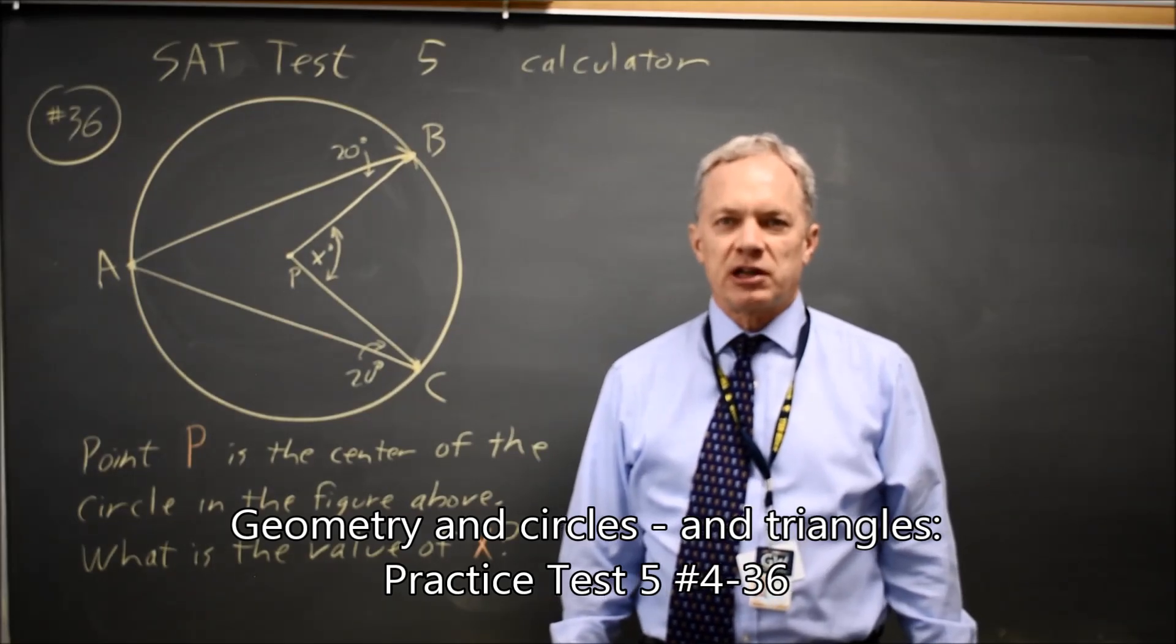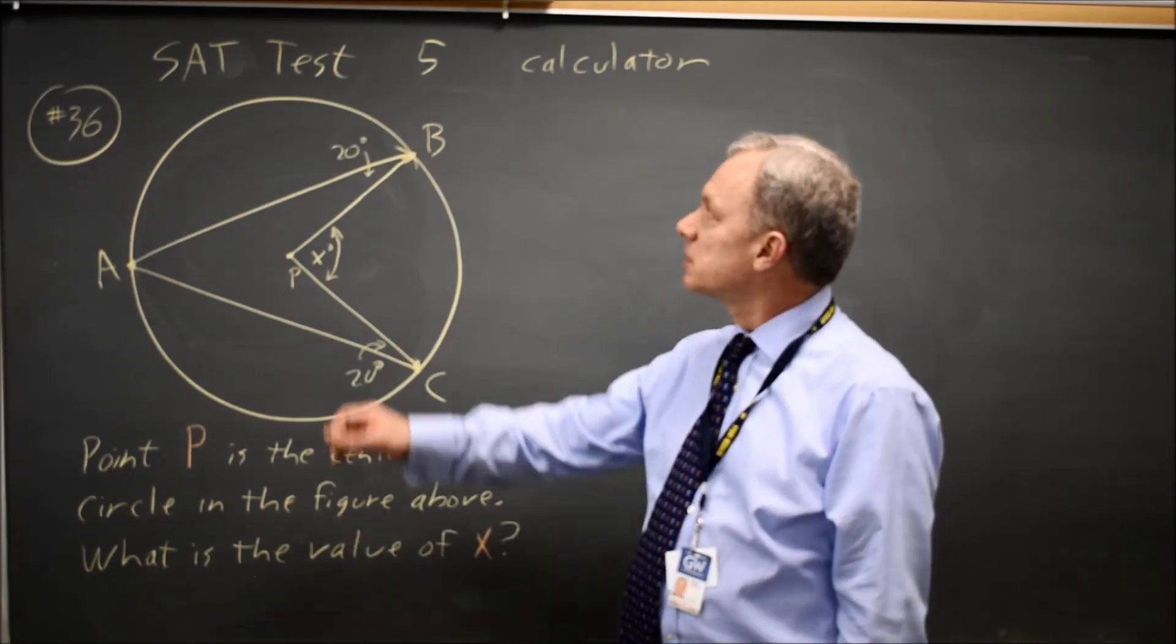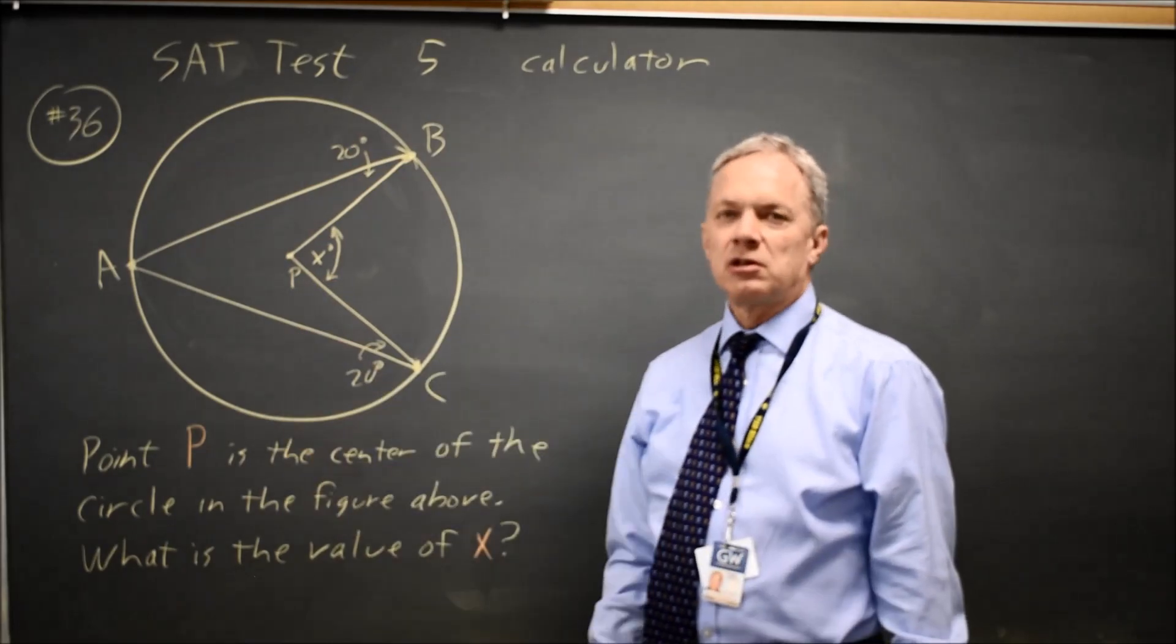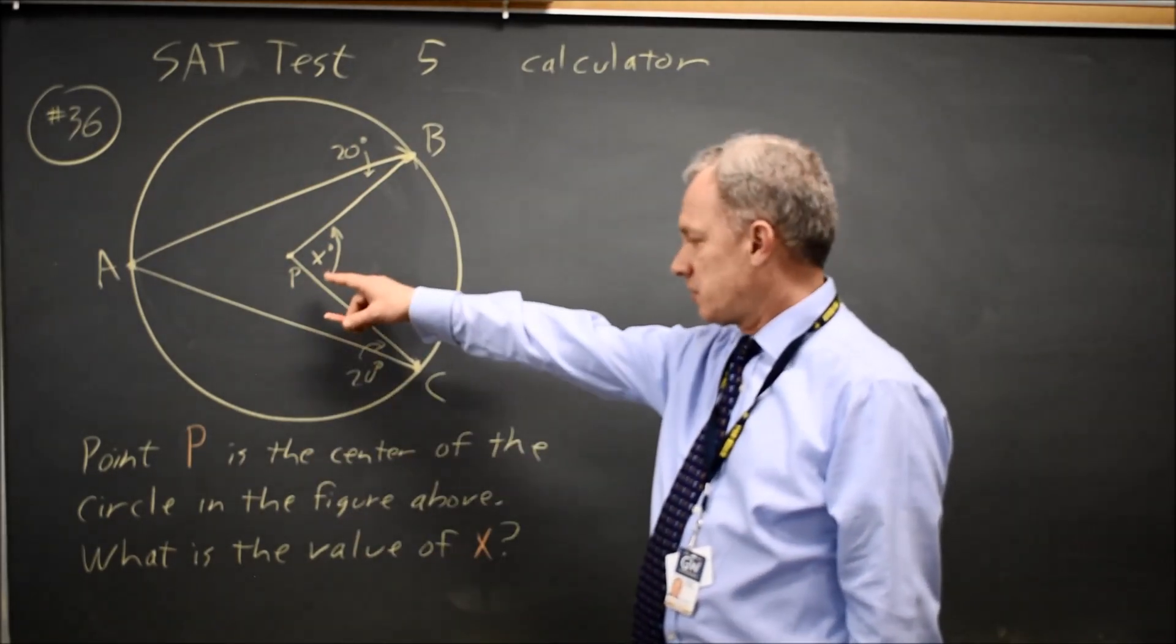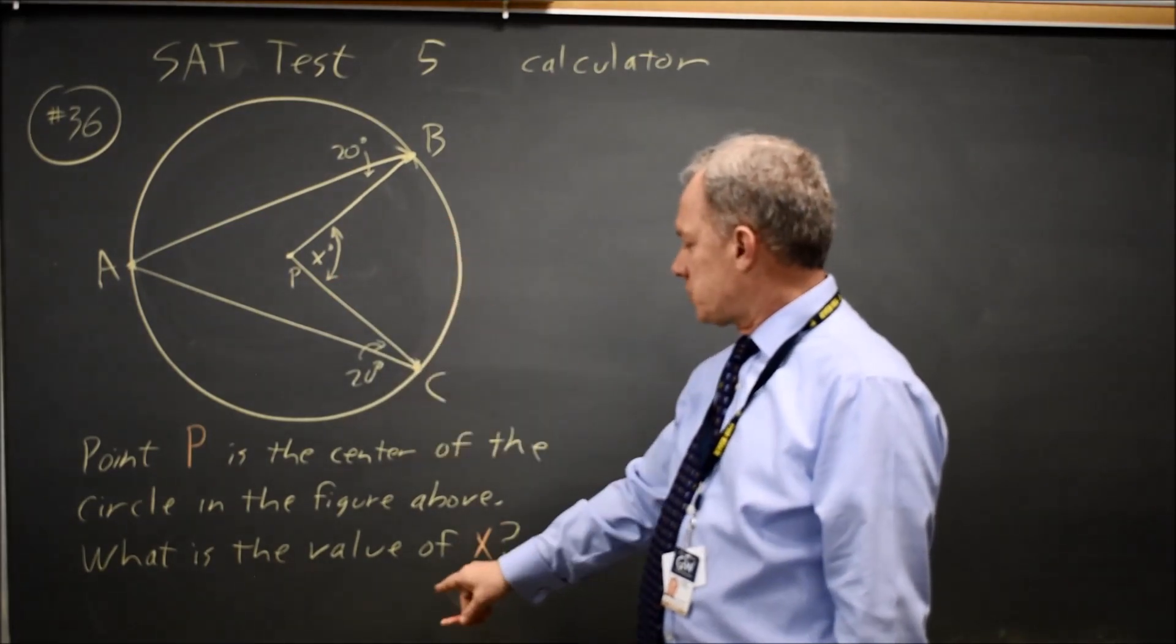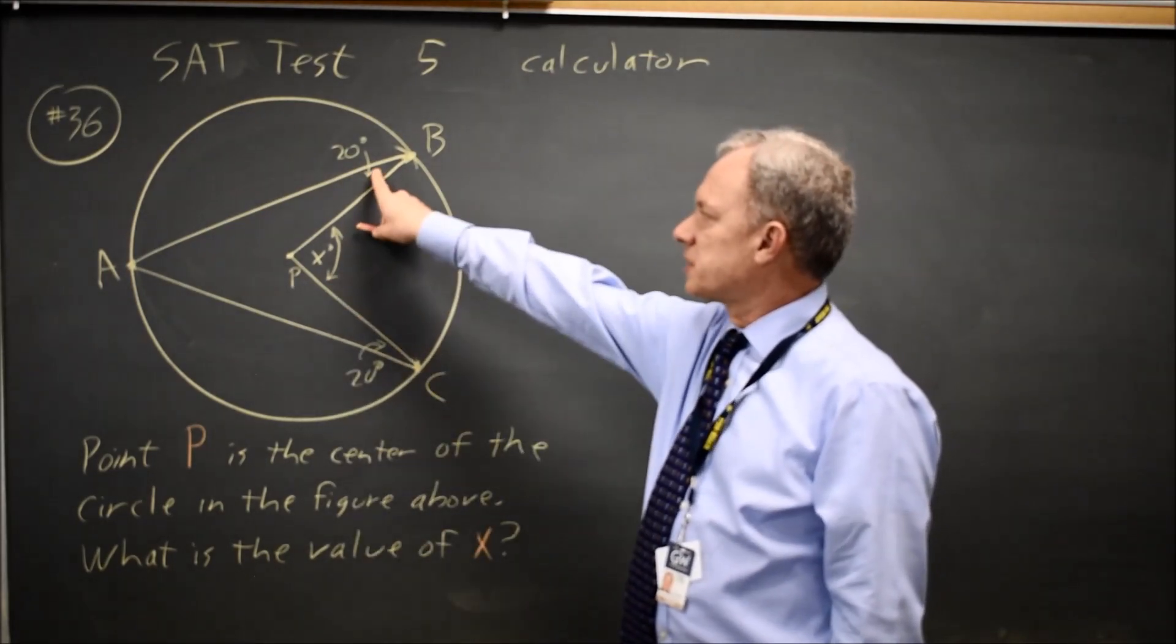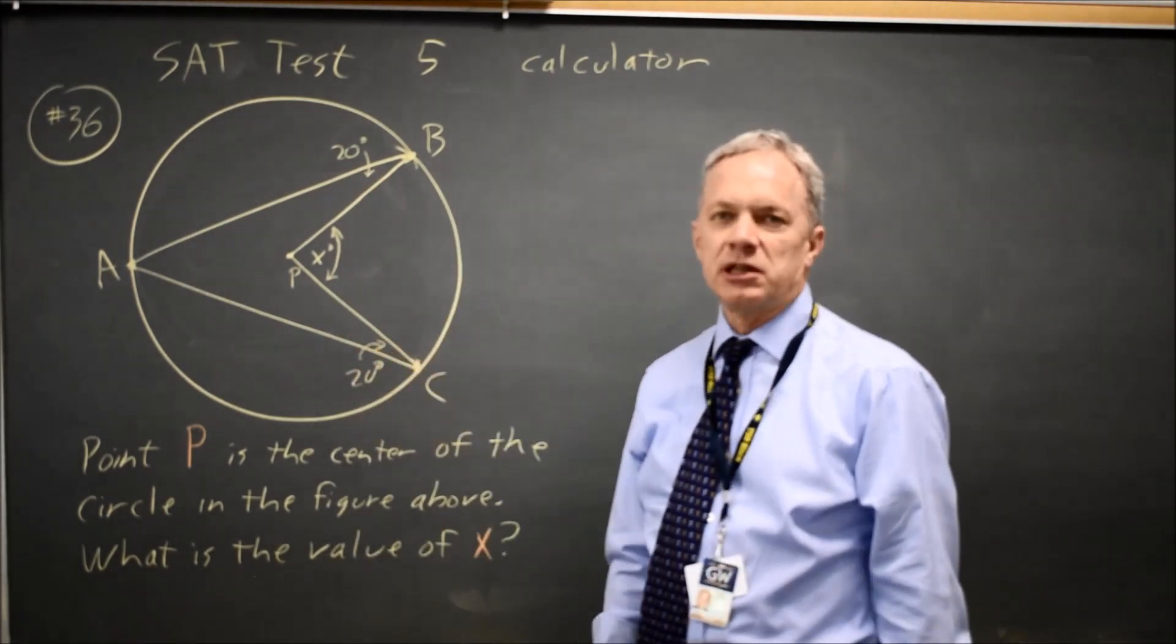This is SAT test 5, calculator question number 36. College Board gives us a circle with some odd angles drawn in it and asks if P is the center of the circle, what is the value of angle X, given that this angle is 20 and this angle is 20?